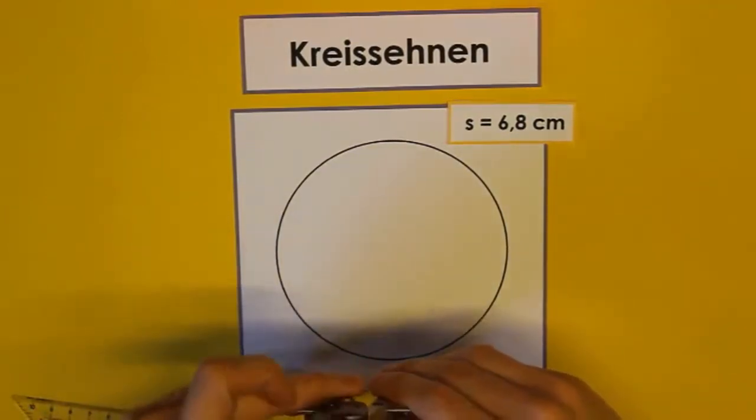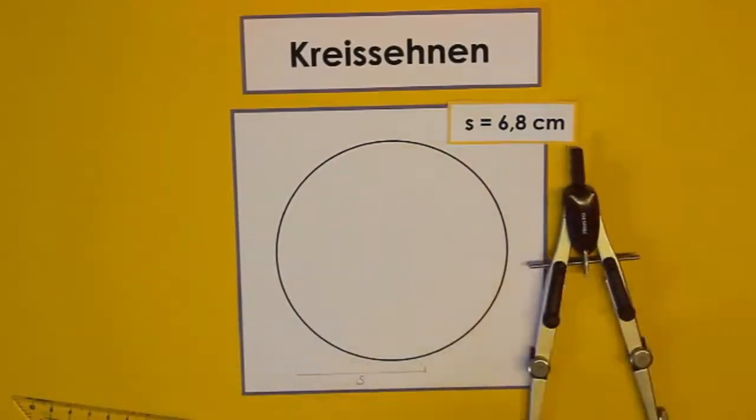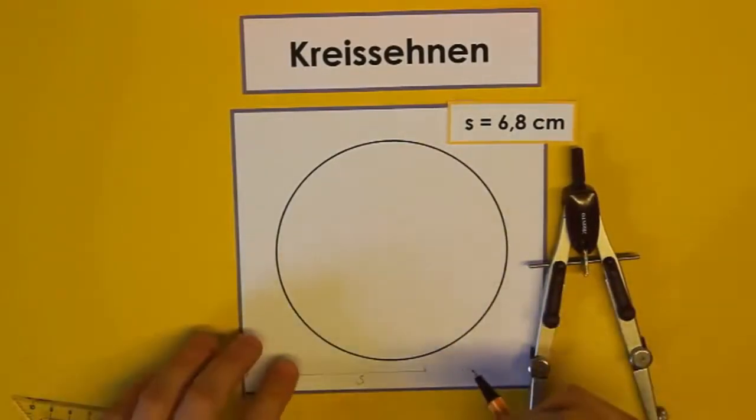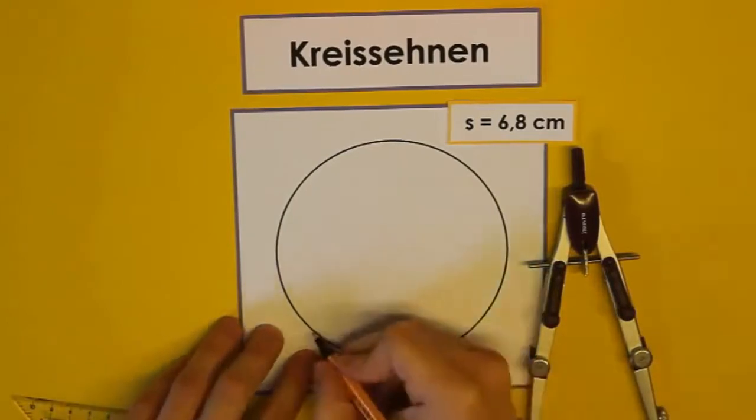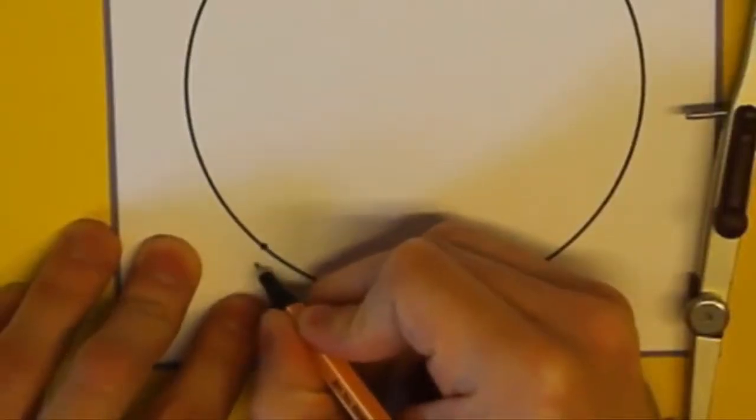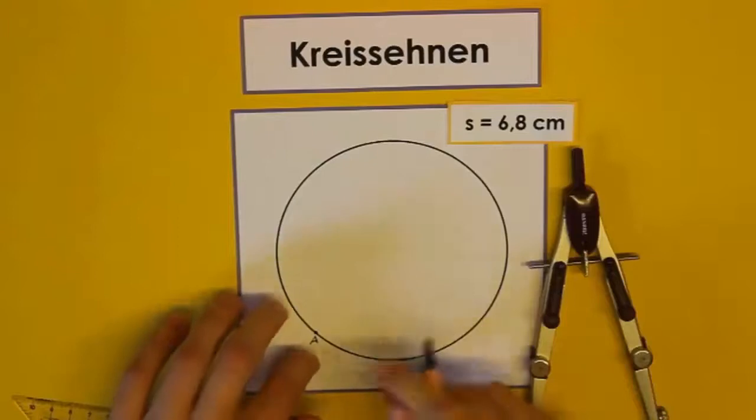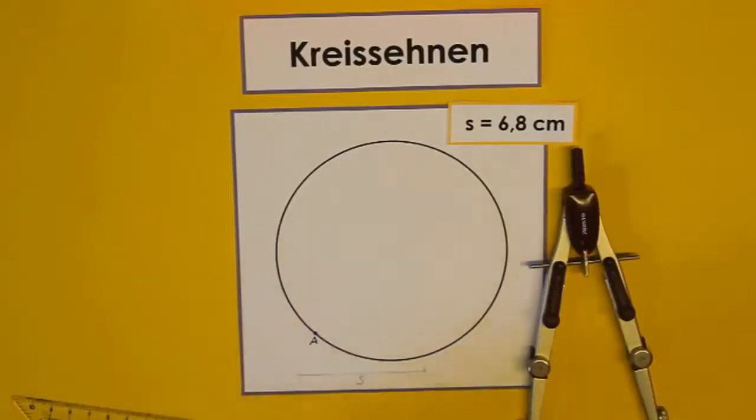Als nächstes benötigen wir einen Punkt am Kreis, von dem wir die Szene zeichnen möchten. Da kein Punkt vorgegeben ist, das manchmal bei Übungsaufgaben der Fall sein kann, können wir selbst einen Punkt wählen. Ich nehme jetzt einfach diesen Punkt und wir beschriften ihn sofort. Ich nenne ihn einfach A. Wir können ihn auch B, C, Z oder was weiß ich, Y nennen. Das ist egal.